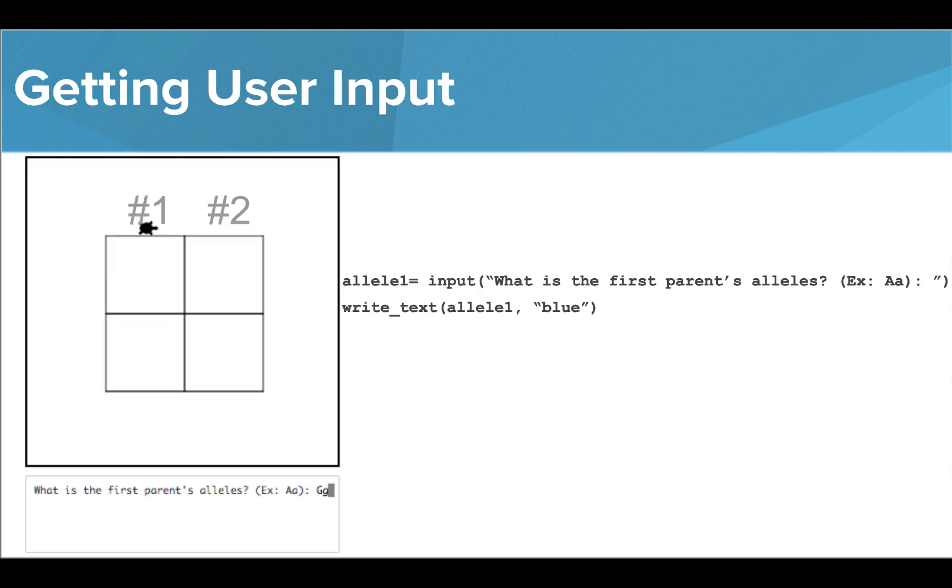If I use the commands written here, all of the letters stored inside my variable, allele one, will print at location one. But I can index these values to print one at a time in different locations.